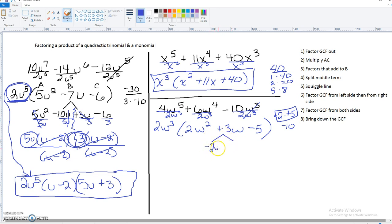We're going to do negative 2W here and a positive 5 here. Our squiggle line down the middle. We can take a 2W out over here. So we've got W minus 1. And we can take a 5 out over here. So it's W minus 1.